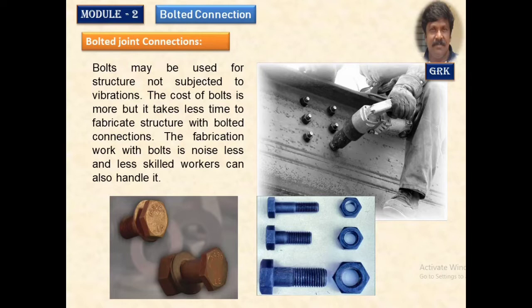We will be studying about the lap and butt joint once again. For the failure of joints, we are going to study about 6 types of failures, out of which only 3 are very important. We will find the strength of these 3 failure modes and finally calculate the efficiency of the bolted joint. HSFG bolts will be studied in the next video.